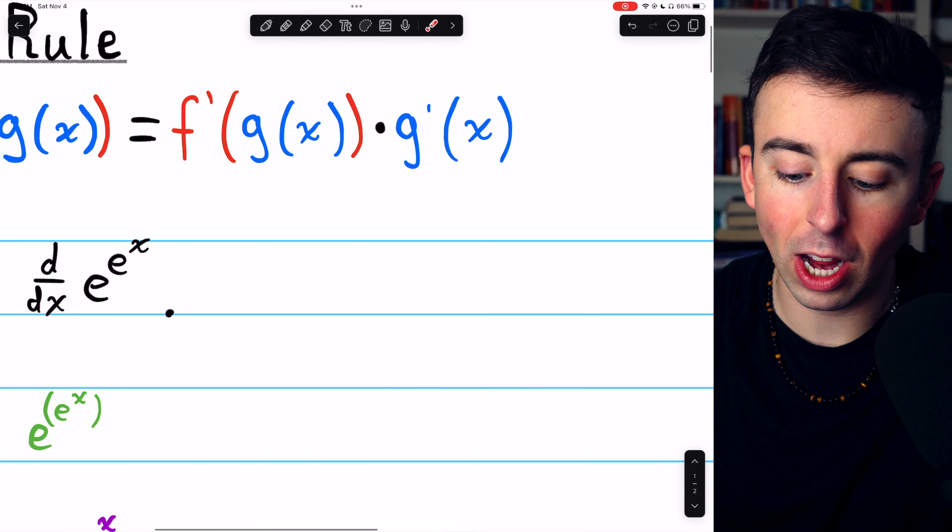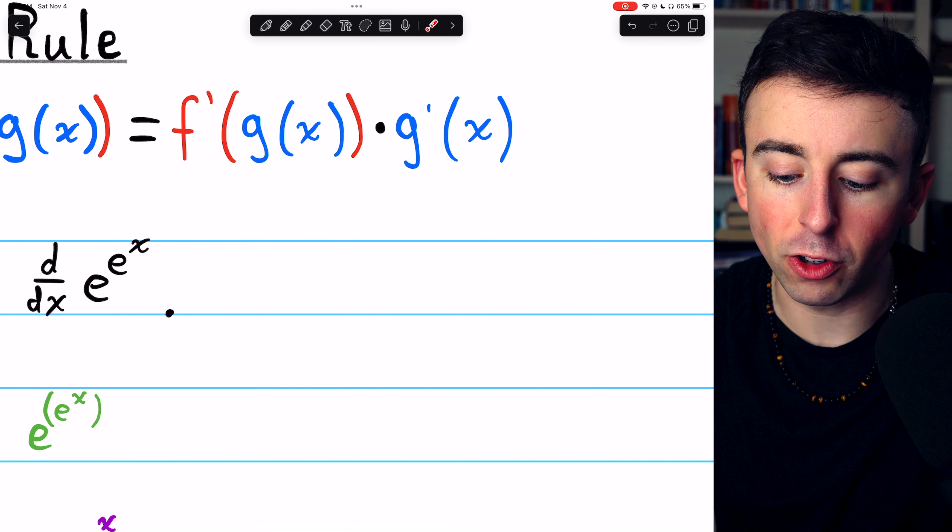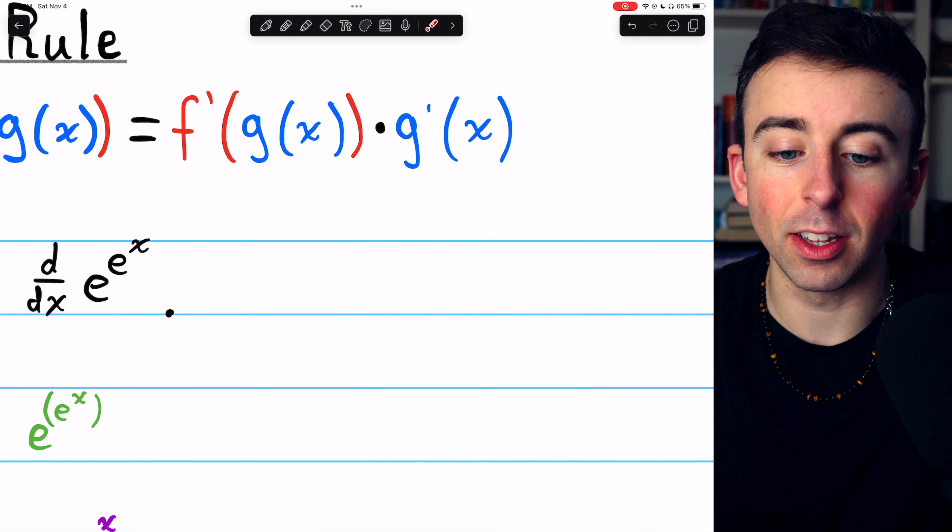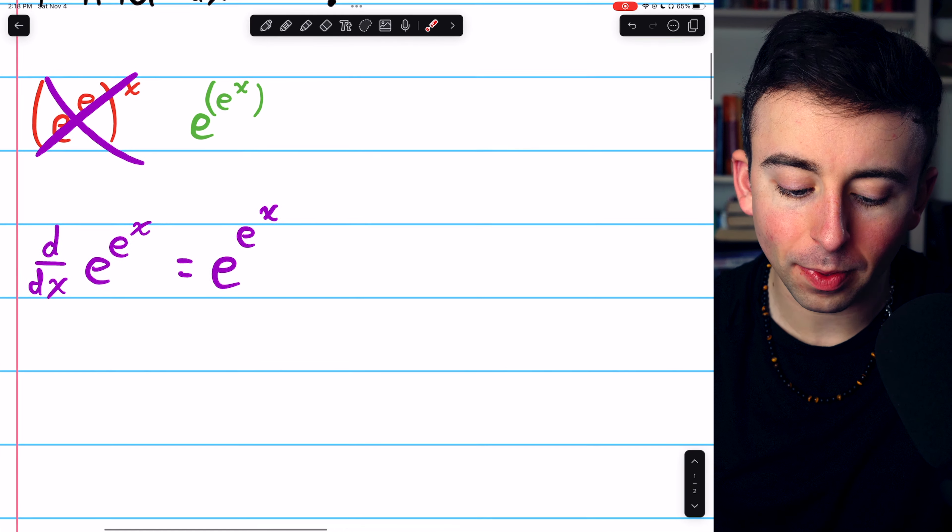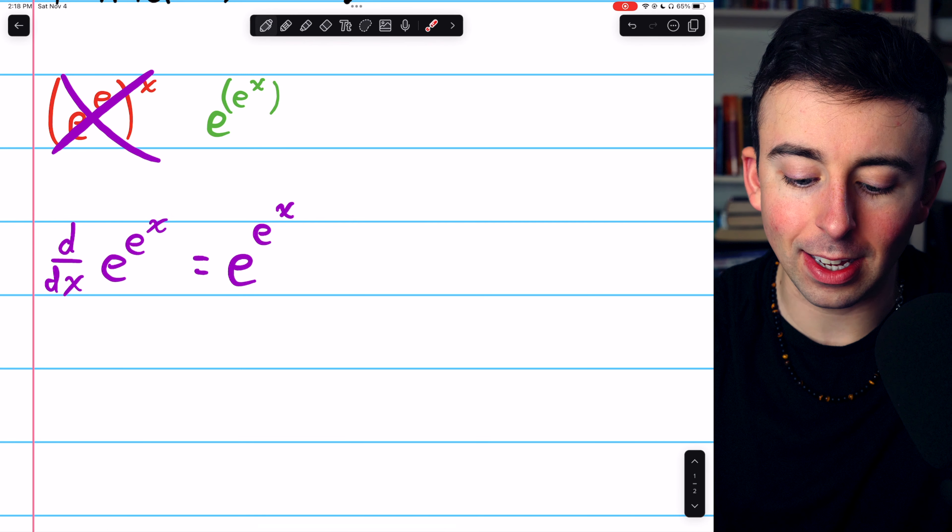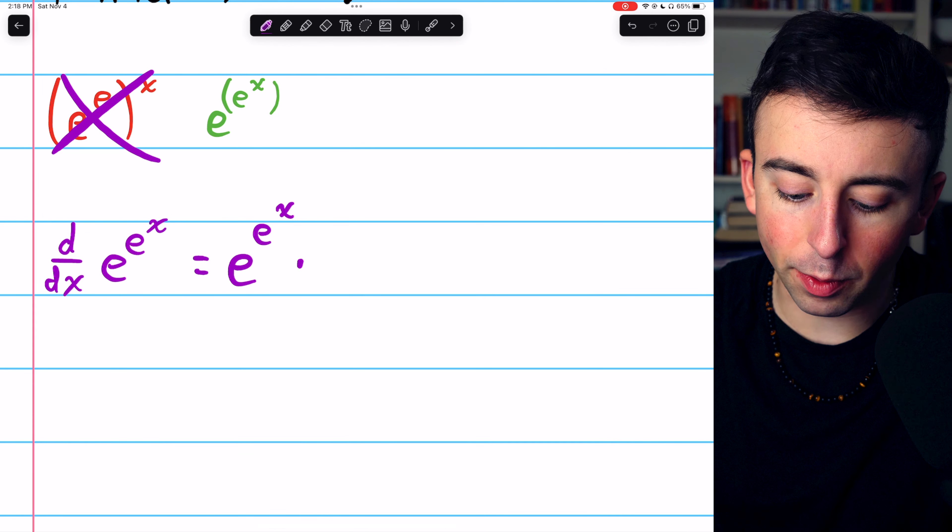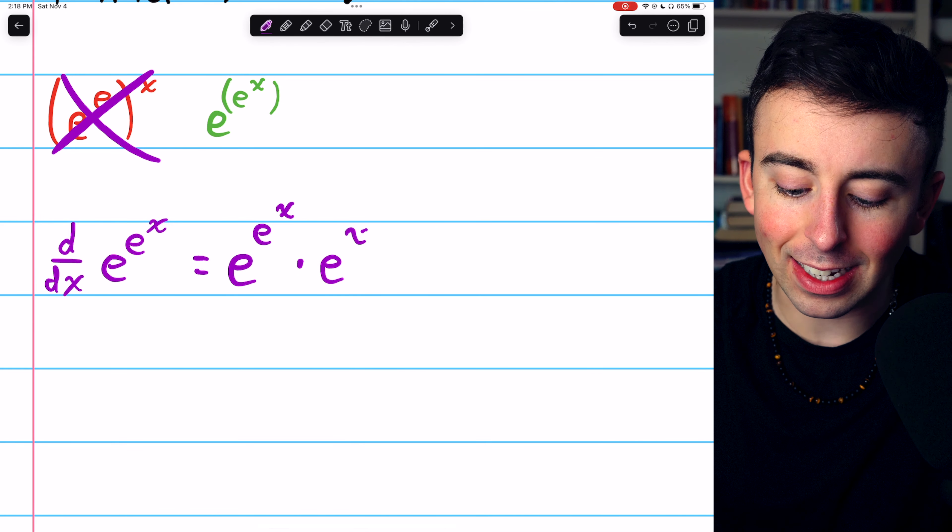And of course, the last step of the chain rule is multiplying by g prime of x. That's the derivative of the inside function. The inside function in this case is e to the x, and the derivative of e to the x is e to the x.